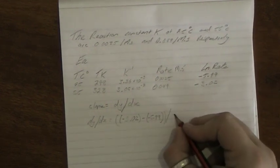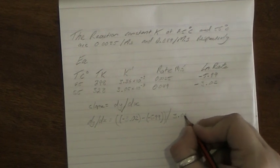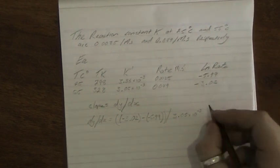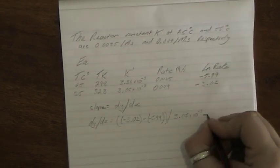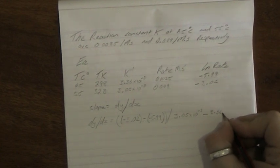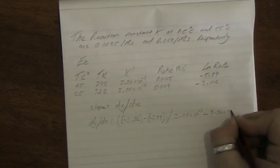And then you want to divide that by the difference between these, same order again. So it's 3.05 times 10 to the power of negative 3 minus 3.36 times 10 negative 3 again.